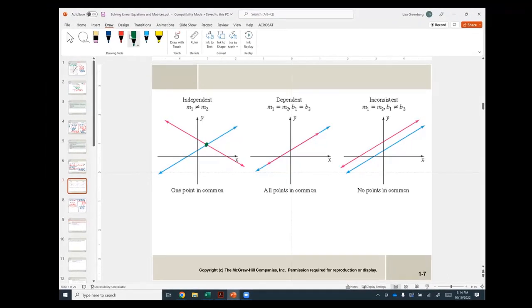So if I were to graph them, I would find one point of intersection. But what if I had an equation like y equals 2x plus 4 and 4y equals 8x plus 16? Notice all I did is multiply this by 4. They're exactly the same equation.